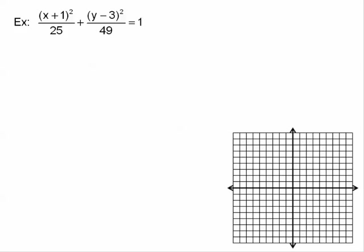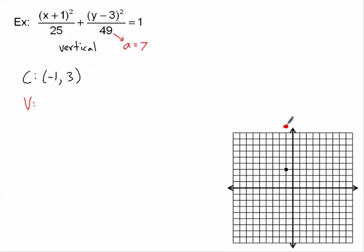Let's graph a vertical ellipse to end the tutorial. It's an ellipse because there's a plus sign between two squared terms with different denominators. Since the bigger denominator is under y, it's a vertical ellipse. The center is (−1, 3). The value of a is 7 — the square root of 49 — so count 7 units up and down. The vertices are (−1, 10) and (−1, −4).